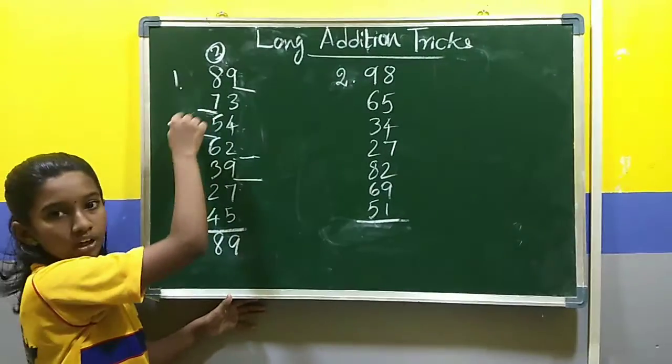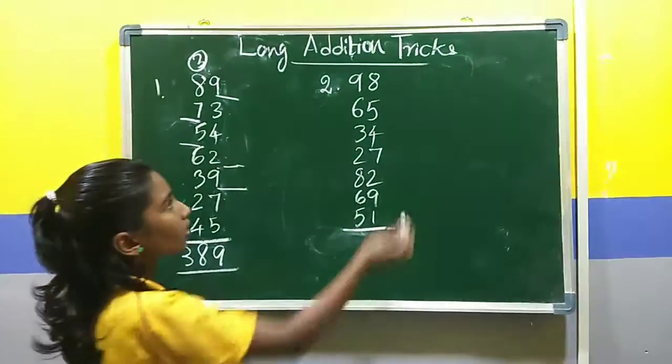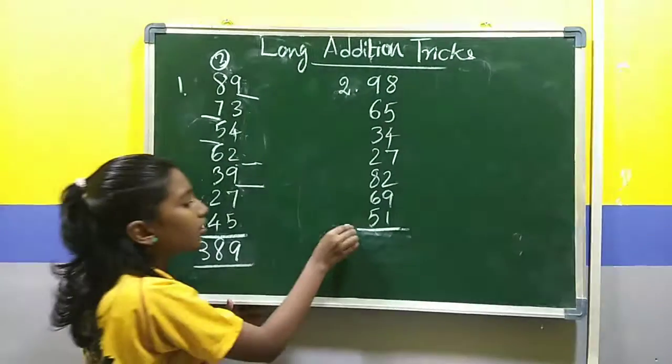We have dropped 2 tens. 2 plus 3, 2 plus 1, 3. Now, you can remember the dropping 10 method and add mentally.